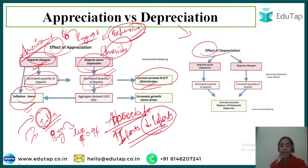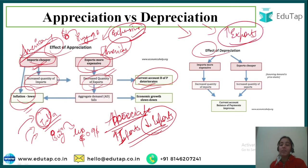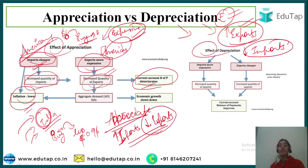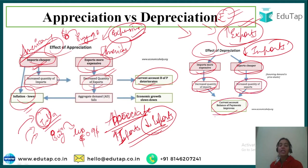Effect of depreciation: exports will increase because Indian goods have become cheaper for America since the rupee has depreciated. Imports will decrease because American goods have become very expensive for India. So there is a decreased quantity of imports and an increased quantity of exports, and the current account balance of payments will improve because we are exporting more and importing less.